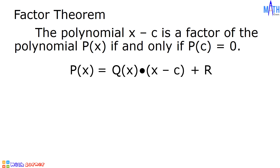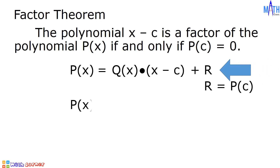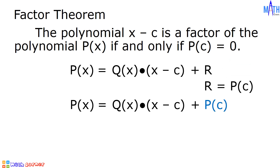By the remainder theorem, r is equal to p of c. Let us substitute p of c for r in this equation. And we have p of x is equal to q of x times the quantity x minus c, and r becomes p of c.